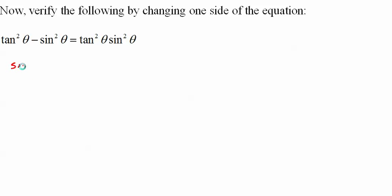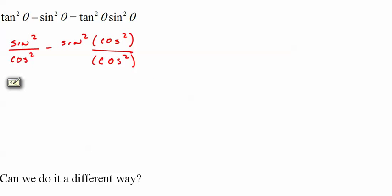One of the things I like to do, and I'm going to stop writing my theta in just to save time, is to break everything down into sine and cosine. I'm just going to ignore this for a while. Now I've got these together. I can write it as sine squared minus sine squared cosine squared all over cosine squared.